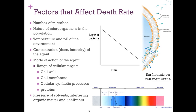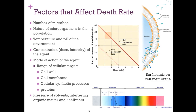Several factors affect the death rate. First, the number of microbes: a higher contamination load takes longer to destroy, as shown on a population chart — a higher starting population requires more time even with logarithmic death. Second, the nature of microorganisms in the population: the target is usually a mixture of bacteria, fungi, spores, and viruses, not just a single type of bacterium.